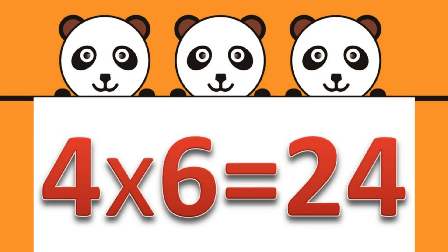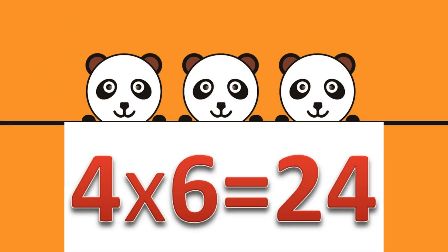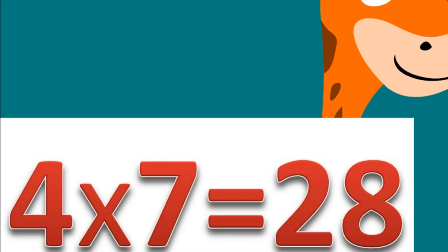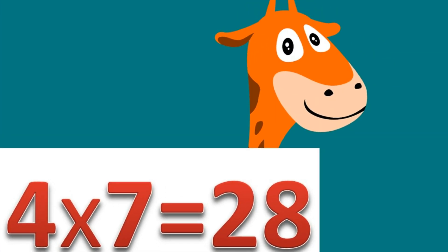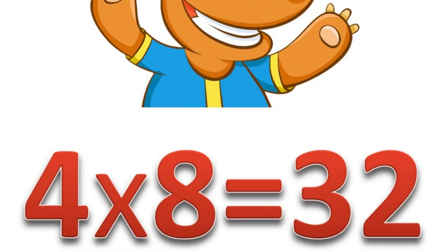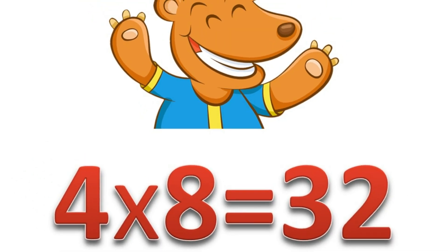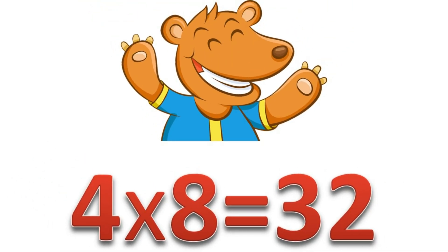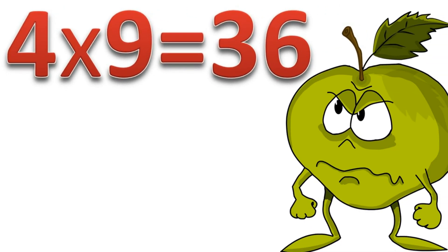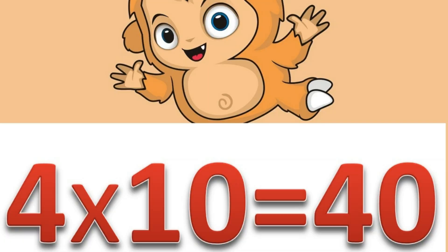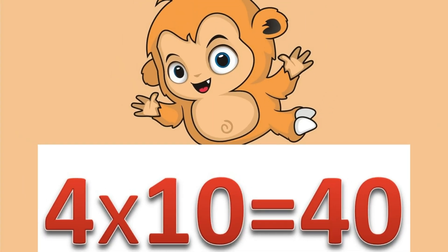Four times six: twenty-four. Four times seven: twenty-eight. Four times eight: thirty-two. Four times nine: thirty-six. Four times ten: forty.